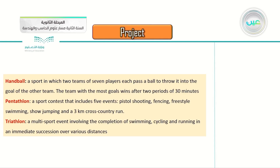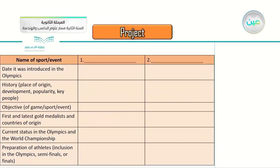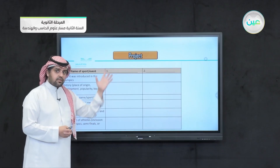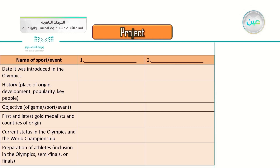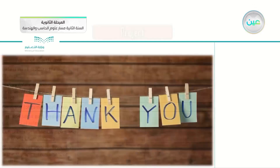Pentathlon: a sport contest which includes five events — pistol shooting, fencing, freestyle swimming, show jumping and a 3-kilometer cross-country run. Triathlon — from the name itself, 'tri' means three: a multi-sport event involving the completion of swimming, cycling and running in immediate succession over various distances. Here is the chart for your research. For each of the two sports you choose, fill in: name of the sport or event, date it was introduced in the Olympics, history and place of origin, development, popularity, key people, objective of the game, first and last gold medalist, countries of origin, current status in the Olympics and world championship, preparation of athletes, and inclusion in the Olympics semifinals or finals.